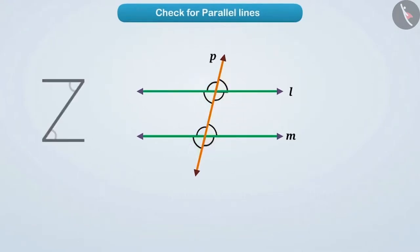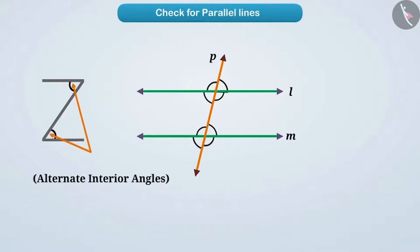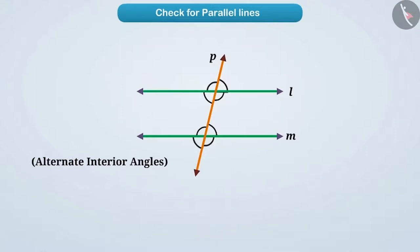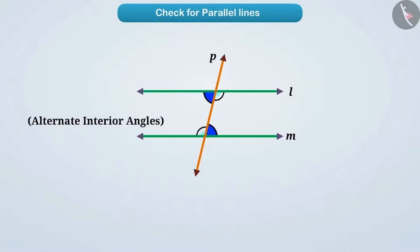Now, keeping in mind the shape of Z, find out which pair of alternate interior angles are there. Here are the pairs of alternate interior angles. We can also find out whether line L and line M are parallel by considering the alternate interior angles.